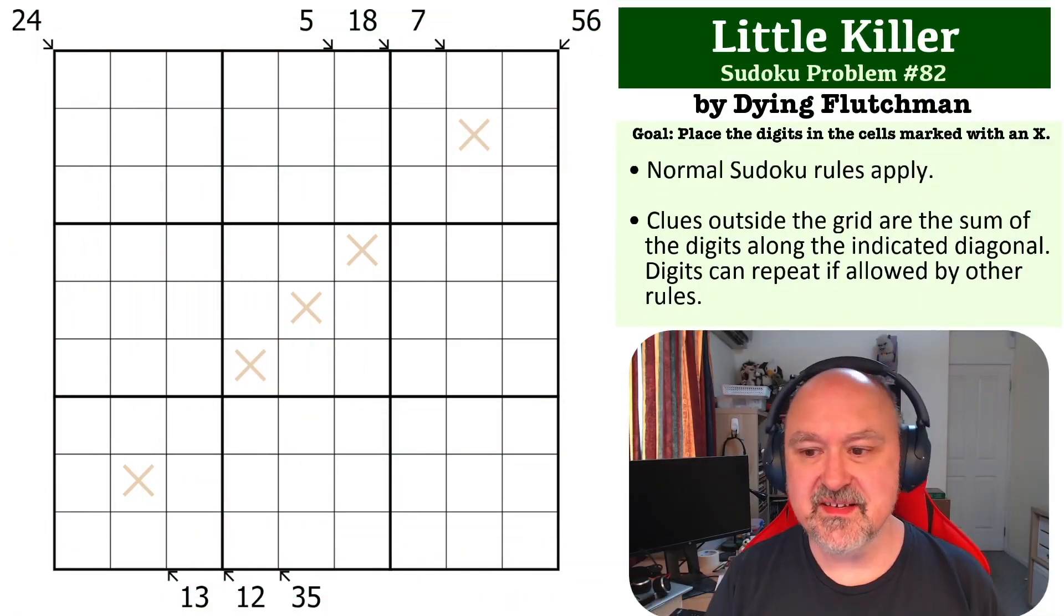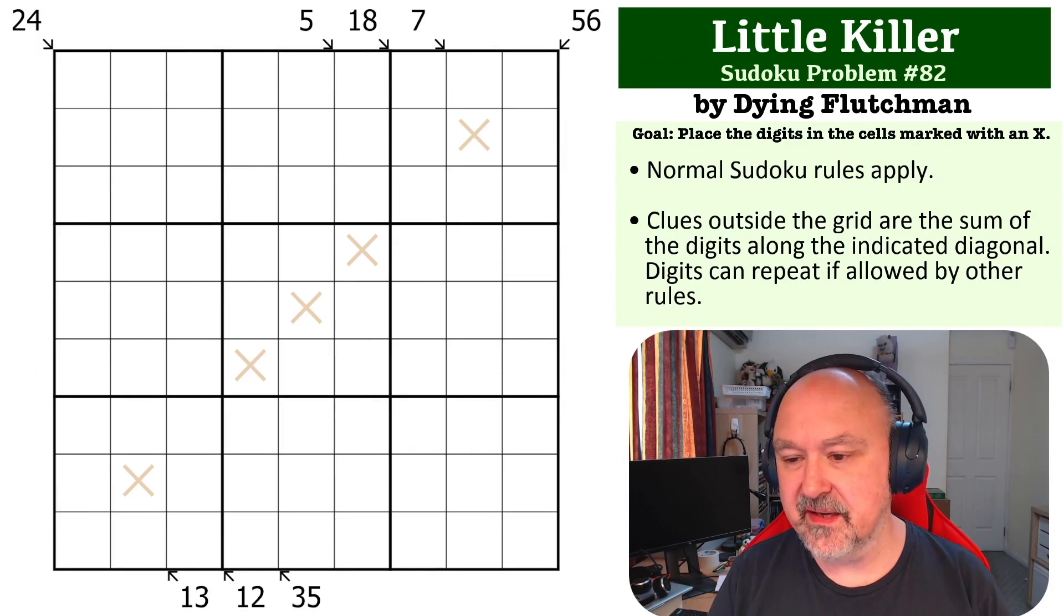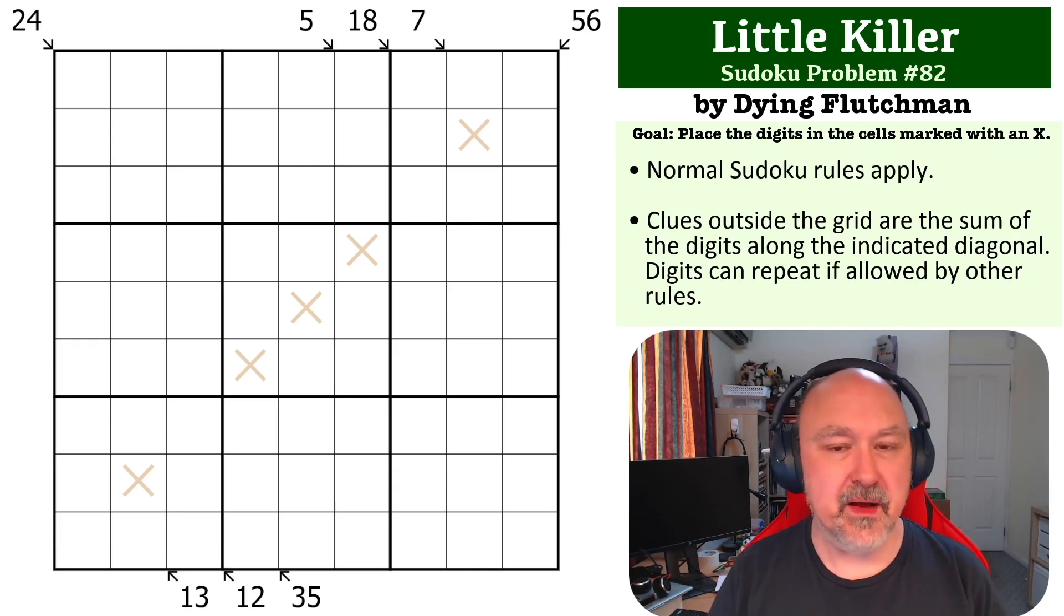Hey everyone, this is Broomster and this is number 82 in the Sudoku Problem Series. This is a Little Killer by Dying Flutchman, and I am always very nervous when it comes to Little Killer problems.